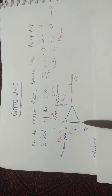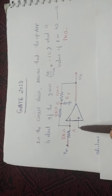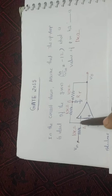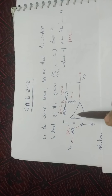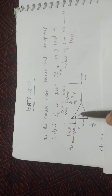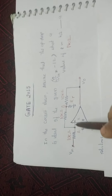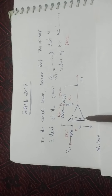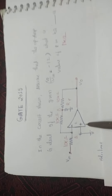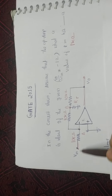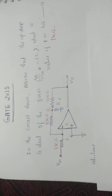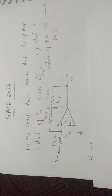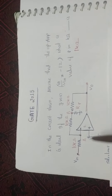Because of the virtual ground concept, the voltage at this node is equal to the voltage at this node. The input resistance of the operational amplifier is infinite, so no current is entering into the operational amplifier. Vn is connected to the inverting terminal, so this operational amplifier is in an inverting amplifier configuration.